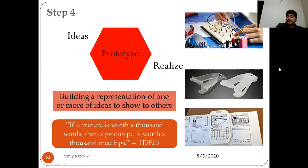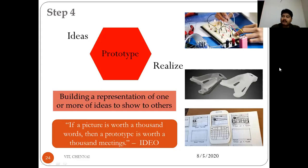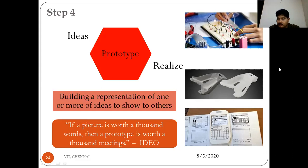Next is the prototype stage. After generating multiple ideas, you need to assess which ideas are technologically feasible and economically viable. You screen and narrow down the ideas, then take selected concepts forward by checking them in a low-fidelity or high-fidelity manner — such as paper prototyping, digital prototyping, 3D printing, or HTML prototyping — building a representation of your ideas to show others and convince them of your thinking.